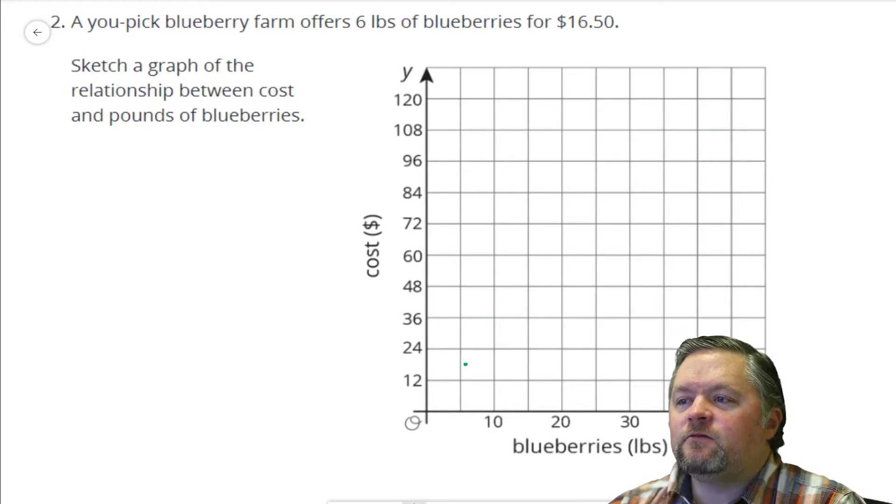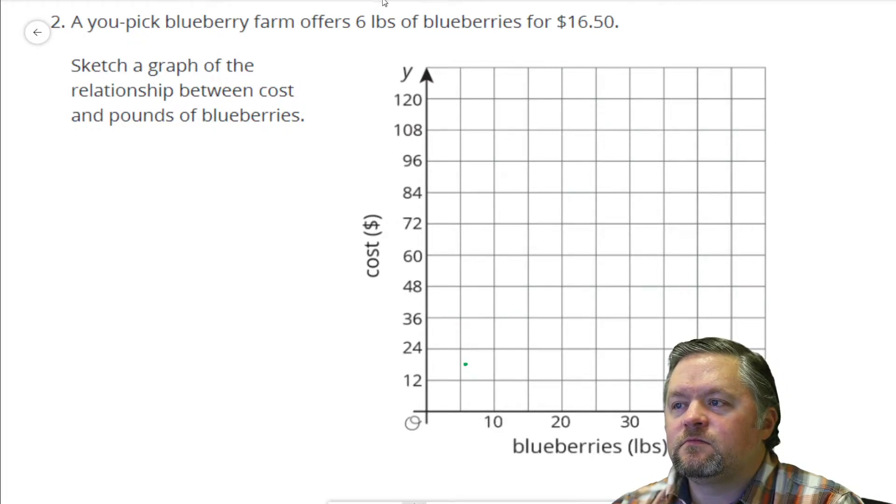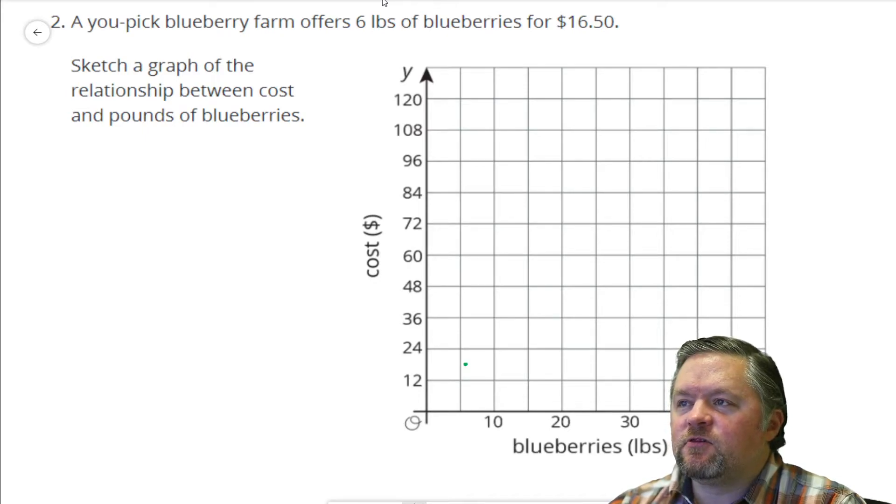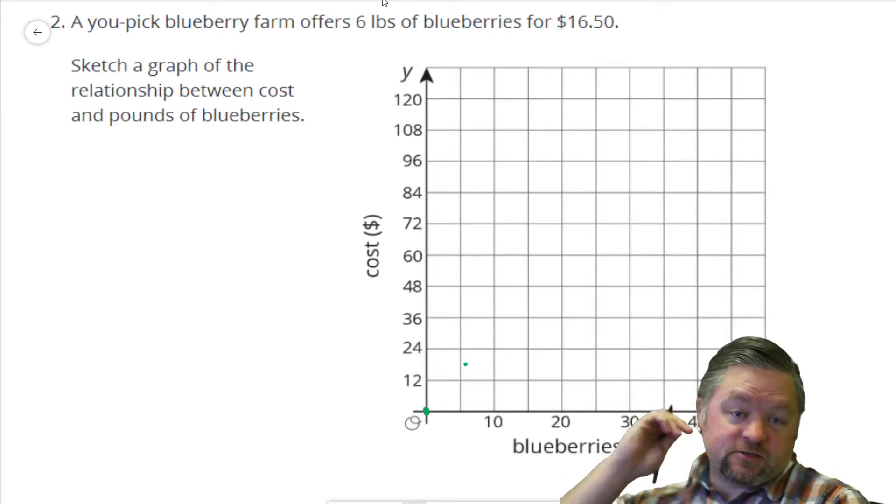How about different amounts? Six pounds. Well, $0 for zero pounds. You don't buy any blueberries, you don't spend any money.